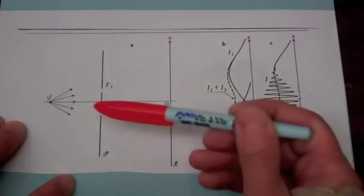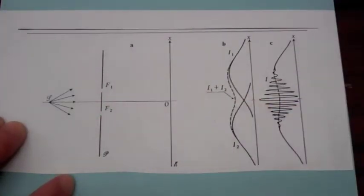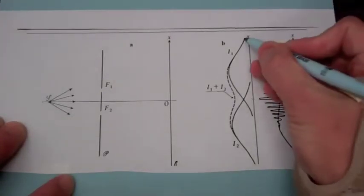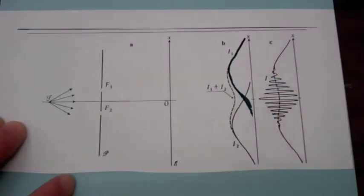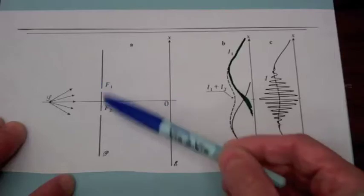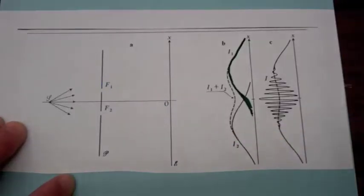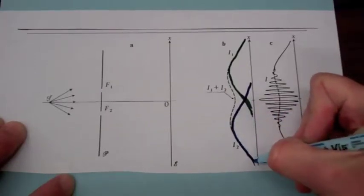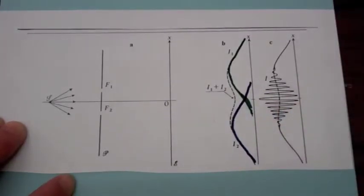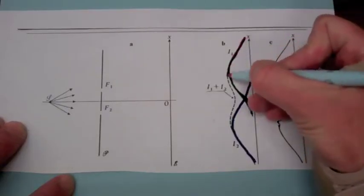When he covered the bottom slit so that light was only going through the top slit, the exposure on the screen was this one right here. And then when he closed the top slit and opened the bottom slit, the exposure he observed was this one. So if light was a particle, when he had both slits open, the resulting exposure on the screen should be the sum of the ones from the individual screens or something like this.